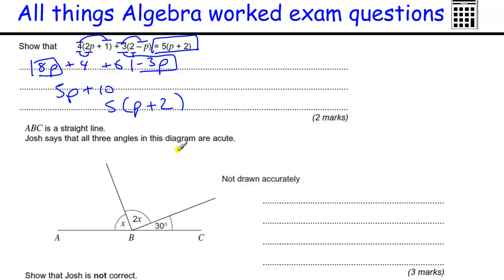Okay. Josh has said that all the angles, all three angles in this diagram are acute. To prove it's not true, or show it's not right, we've got to work out what the angles are. So we've got a little equation going on here. We've got X, 2X, and 30. Equals 180 because that's a straight line, it's 180 degrees. All this is going to be 180. So we've got 3X plus 30 is 180.